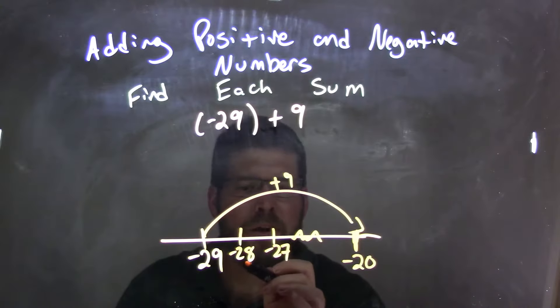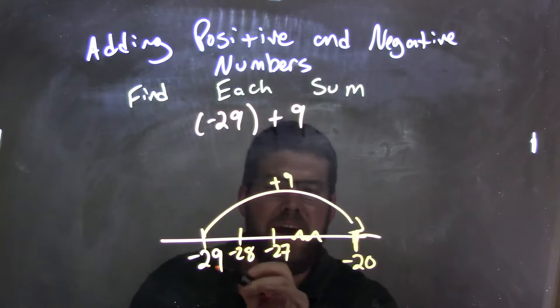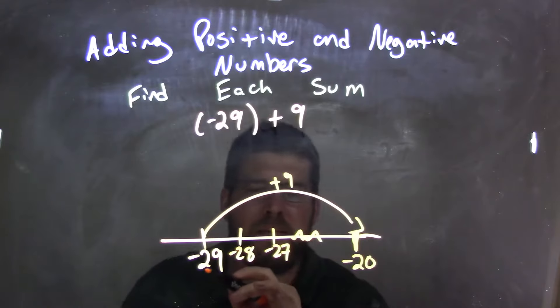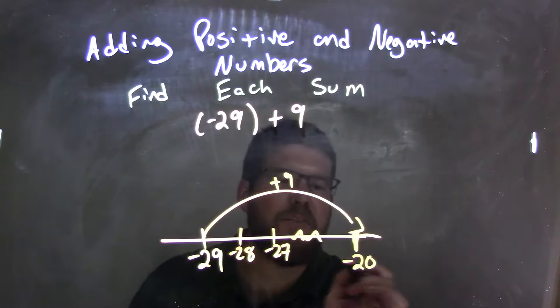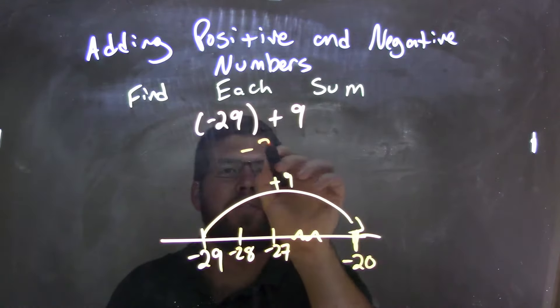Negative 29, 1 unit, negative 28, 1 unit, negative 27. We can see how the 9s match up here, negative 29 plus 9 gives me that negative 20 as my final answer.